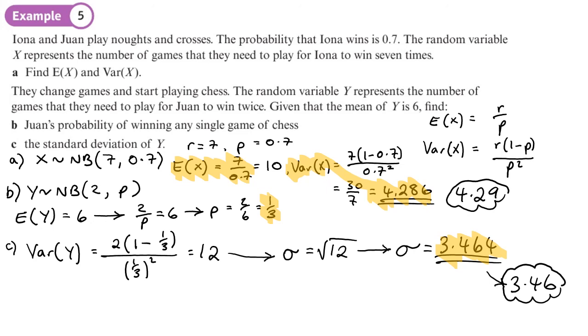So four decimal places for probability, three significant figures pretty much for everything else. Okay, so you should now be able to do exercise 3D on pages 53 to 54. So just for reference, here's E(X) and here's Var(X), so you've got these here if you need them to do that exercise. Thank you.